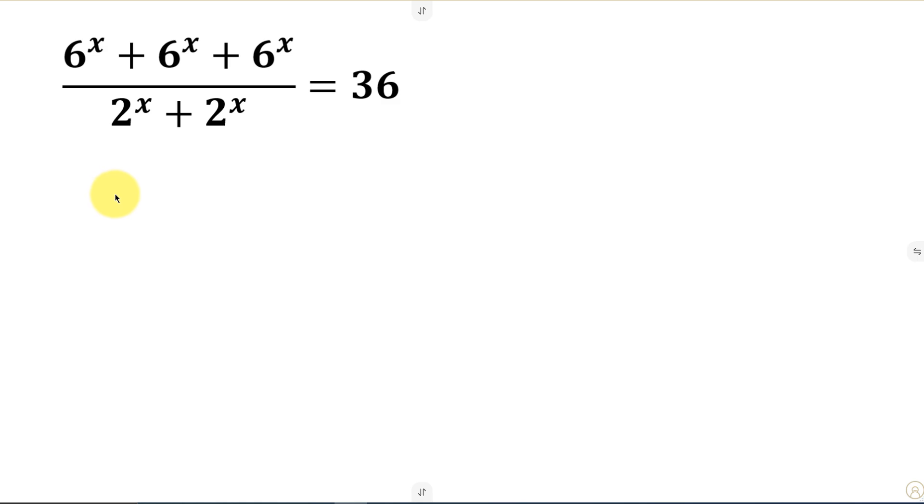Hello everybody, welcome back to the channel. In this question we're going to be solving for the value of x given that 6 to the power of x plus 6 to the power of x plus 6 to the power of x all over 2 to the power of x plus 2 to the power of x is equal to 36.